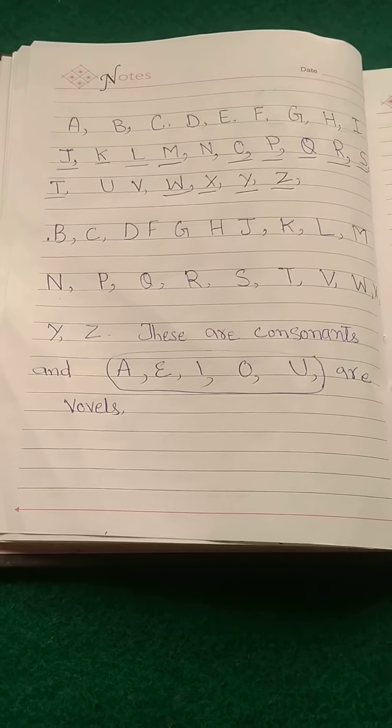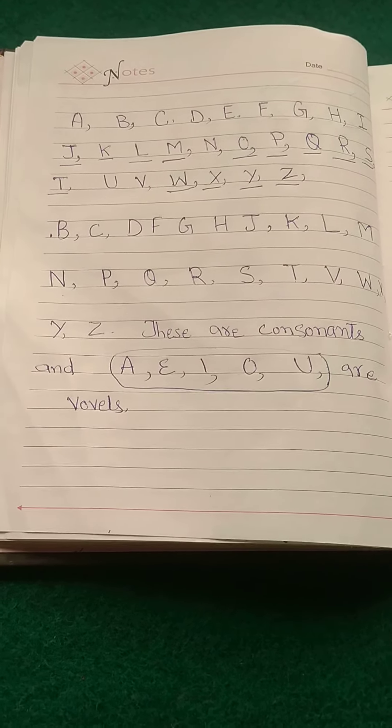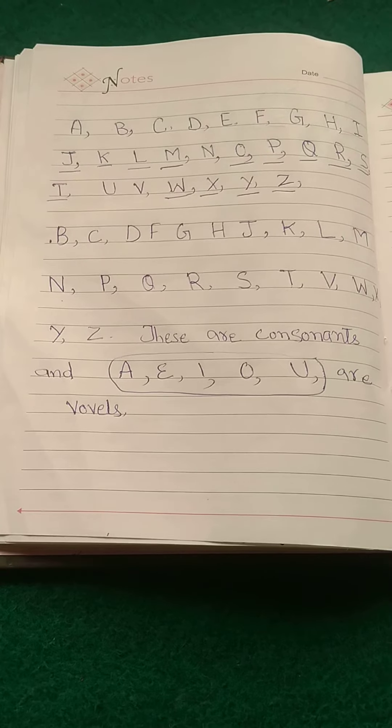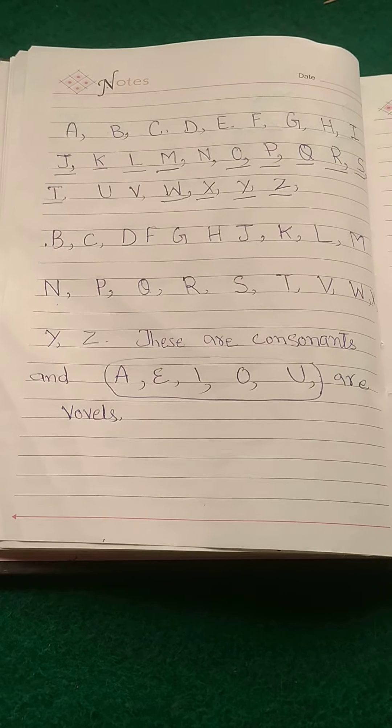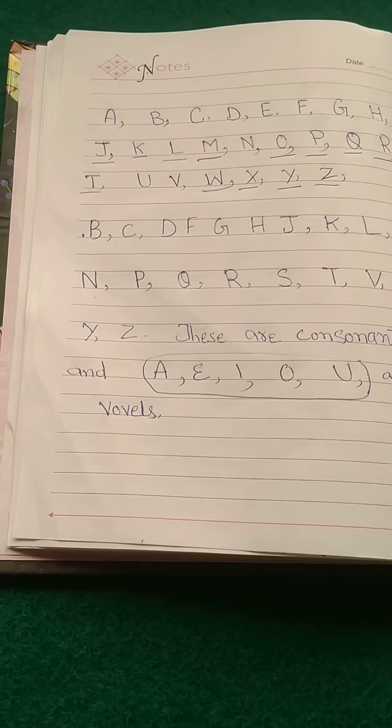इन हुरूफ को कांसोनेंट्स कहा जाता है. ए, E, I, O, U इन को वाविल कहा जाता है. शुक्रिया.